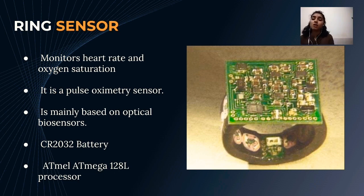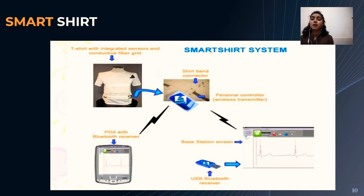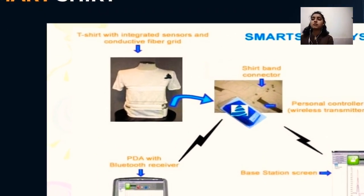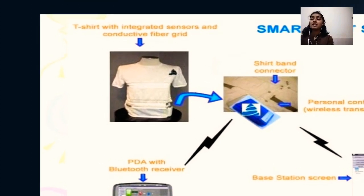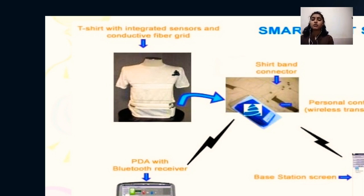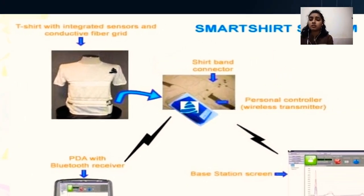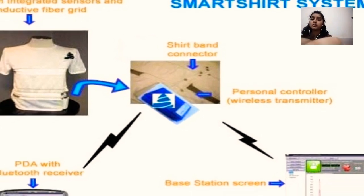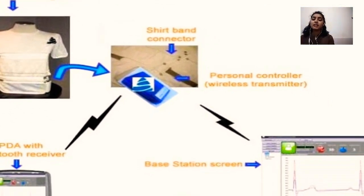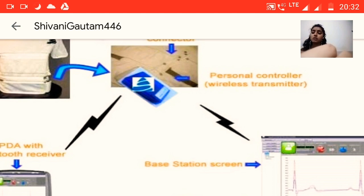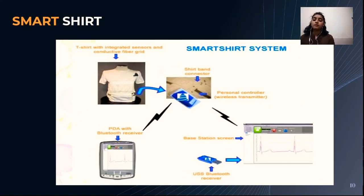The disadvantage of the ring sensor is that its initial cost is very high. In the case of the smart shirt, integrated sensors and a conductive fiber grid are attached to a shirt. A shirt-pan connector, when it detects any parameter, sends a signal to either a PDA with Bluetooth or a personal controller wireless system that carries out further treatment processes. It is easy to wear and take off, but its battery life is very short.